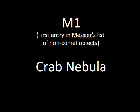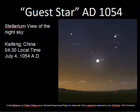This video will discuss the object known as M1, more commonly called the Crab Nebula. It is the first entry in Messier's list of objects that are not comets that he put together. There are 110 in the list now, but some are modern additions. You can see my other video on the Messier catalog for more details on that.